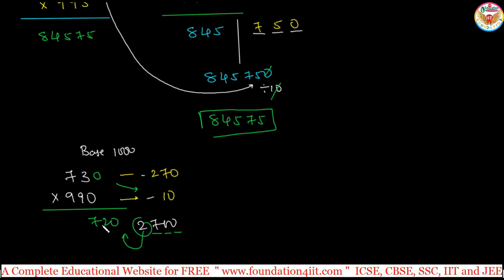We already multiplied with an extra 0, so that 0 should be removed. That means 73 times 990's answer is 72270. Without taking this lengthy process, you can use this method.